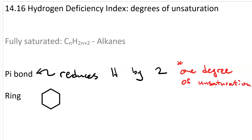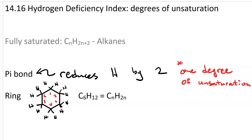Consider a structure that has a ring, like cyclohexane. Cyclohexane has 6 carbons and 12 hydrogens, so the formula is C6H12, corresponding to CnH2n. That means a ring is also a degree of unsaturation.